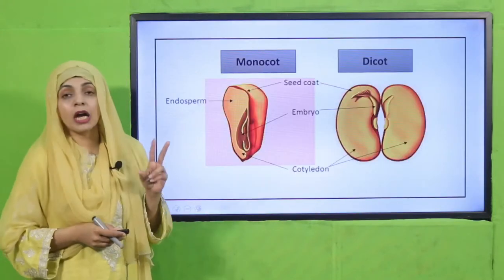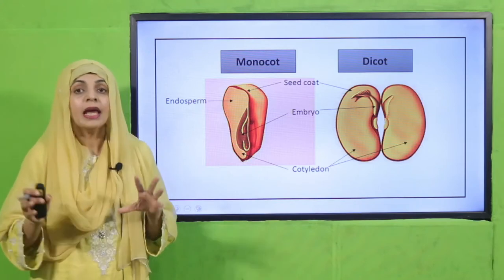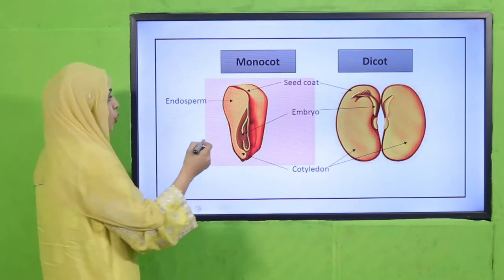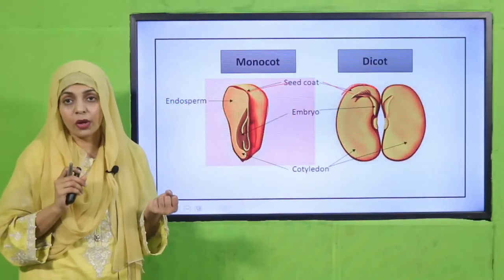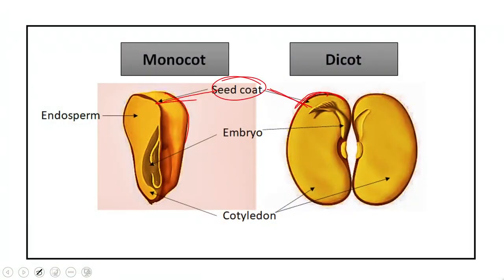There are two types of seeds: monocot and dicot. Looking at their outer structure, both have a seed coat — the outer covering. Both seeds have an embryo and cotyledons present. The difference is that dicot seeds have two cotyledons, whereas monocot seeds have a single cotyledon and a single embryonic leaf.